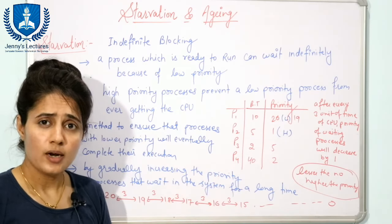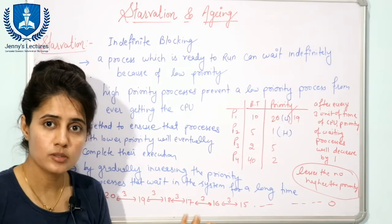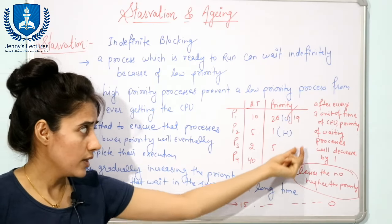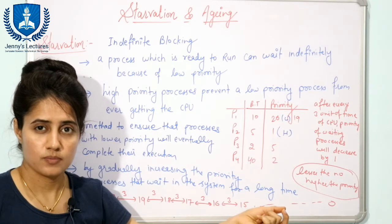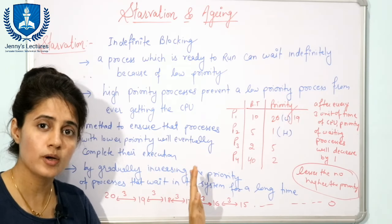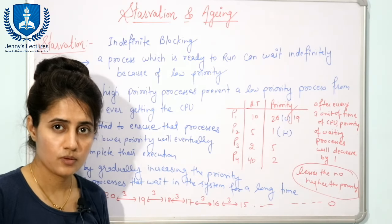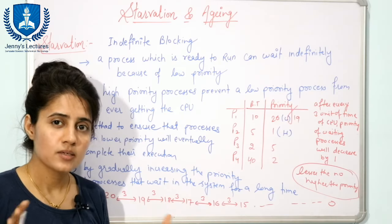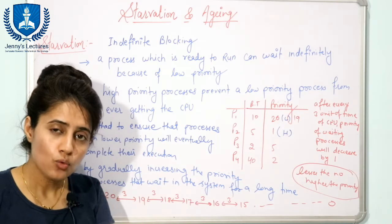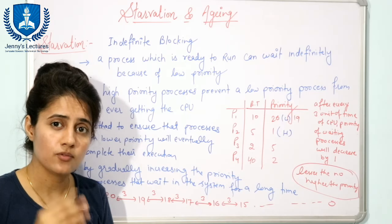Sometimes they can say that the priority of running processes as well as waiting processes will be increased by some amount — maybe one or two. Here we are taking just the case where priority of waiting processes only increases. You have to take care of that in the question — maybe priority of running processes increases by one and priority of waiting processes increases by two. The main principle is: the priority of processes that are ready to run but waiting for the CPU will be increased.